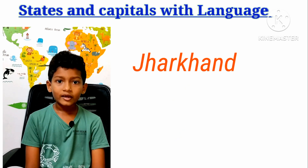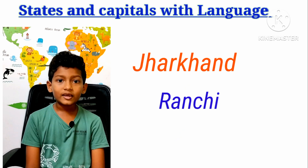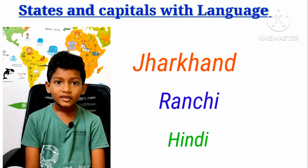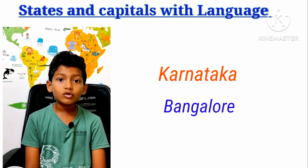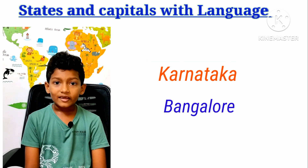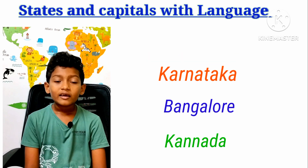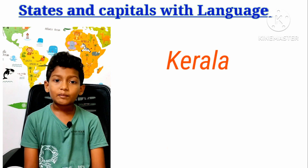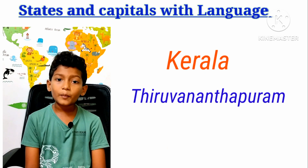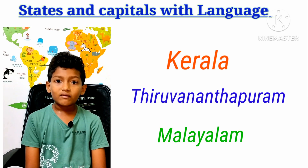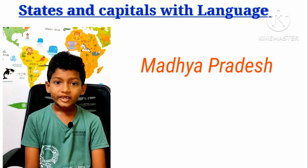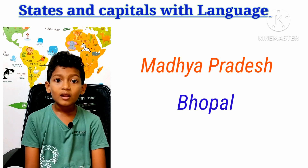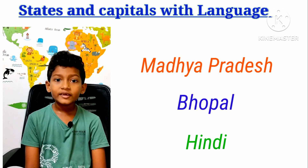Jharkhand chapter: Ranchi, Language: Hindi. Karnataka chapter: Bangalore, Language: Kannada. Kerala chapter: Thiruvananthapuram, Language: Malayalam. Madhya Pradesh chapter: Bhopal, Language: Hindi.